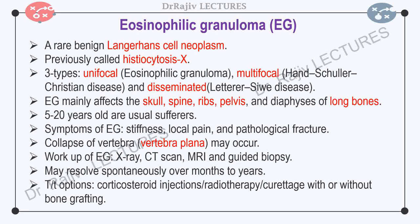Eosinophilic granuloma primarily affects children and adolescents, those 5 to 20 years old. Symptoms include stiffness, local pain, and sometimes pathological fracture. In the spine, there is collapse of the vertebra known as vertebra plana. Diagnostic workup includes X-ray, CT scan, MRI, and guided biopsy. Hand-Schüller-Christian disease classically presents with the clinical triad of skull lesions, exophthalmos, and diabetes insipidus.